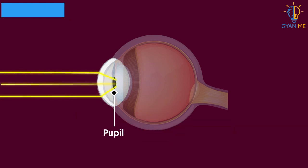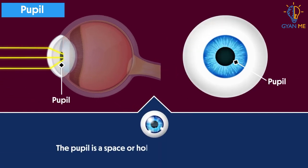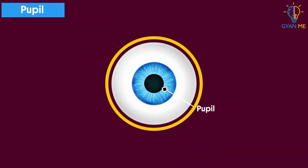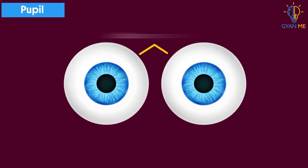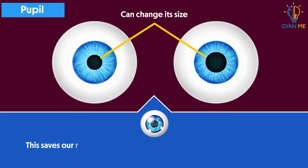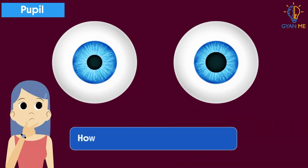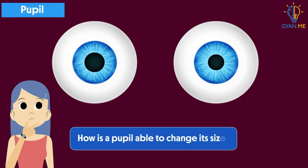Now light enters through the small hole called the pupil. The pupil is a space or hole in the center of the eyeball — it is part of the disc that you see here. A pupil can change its size to regulate the amount of light entering the eye. This is important because it saves our retina from getting damaged by high intensity of light. So now you might be thinking, how is the pupil able to change its size? Think about it and we will see you in the next video.